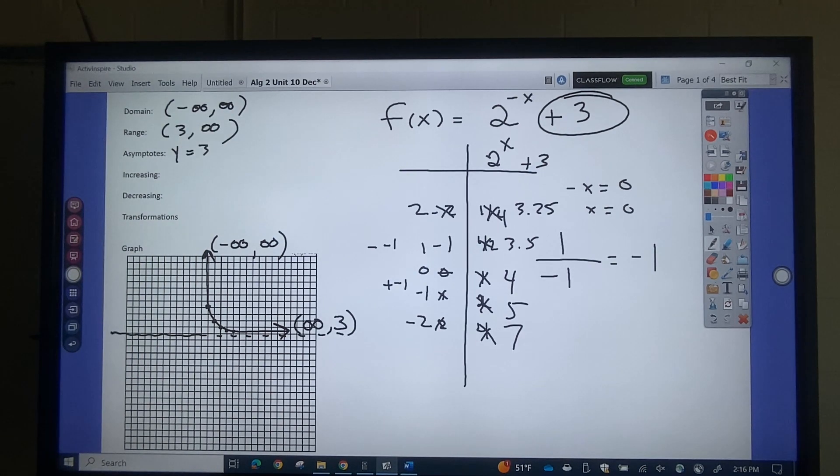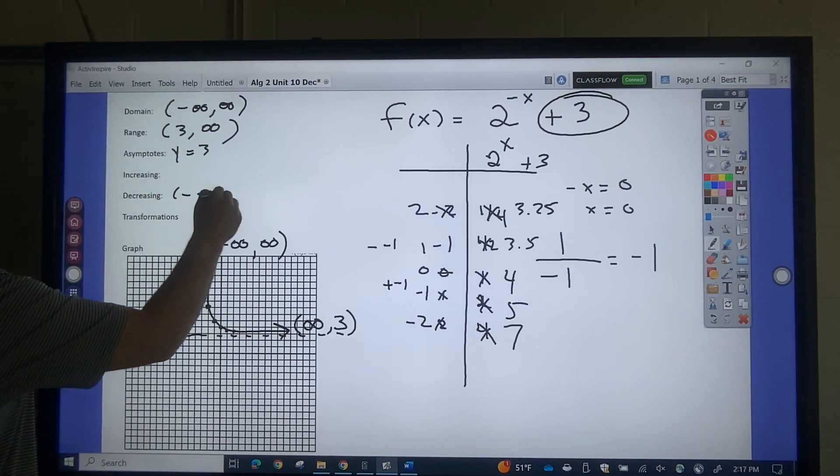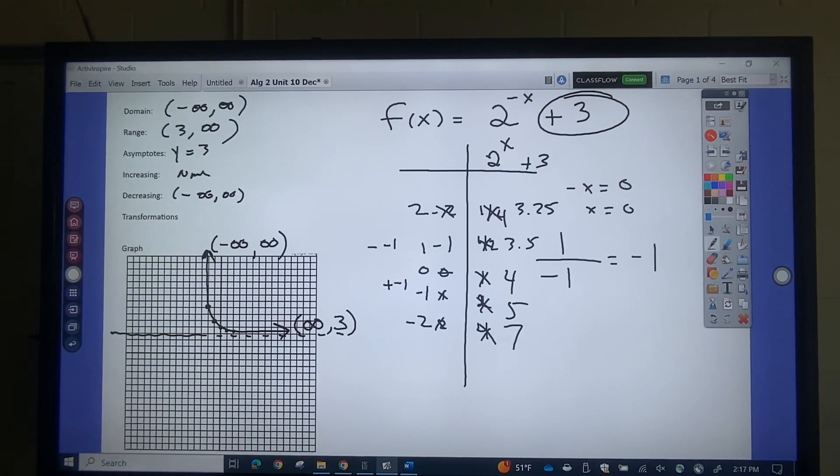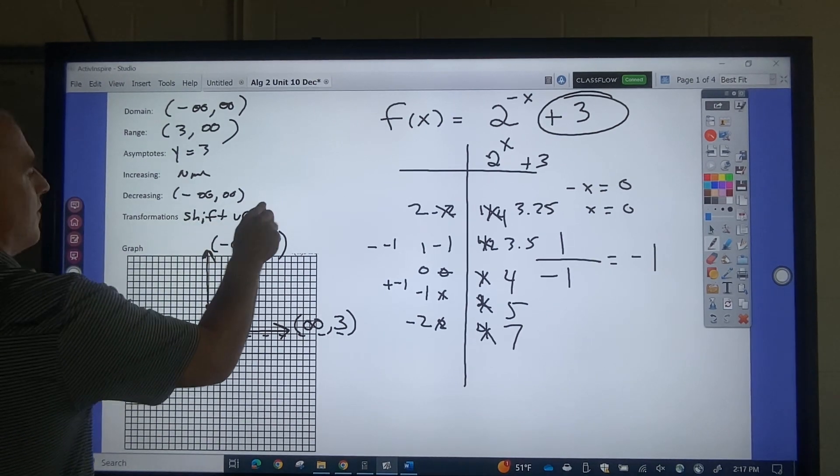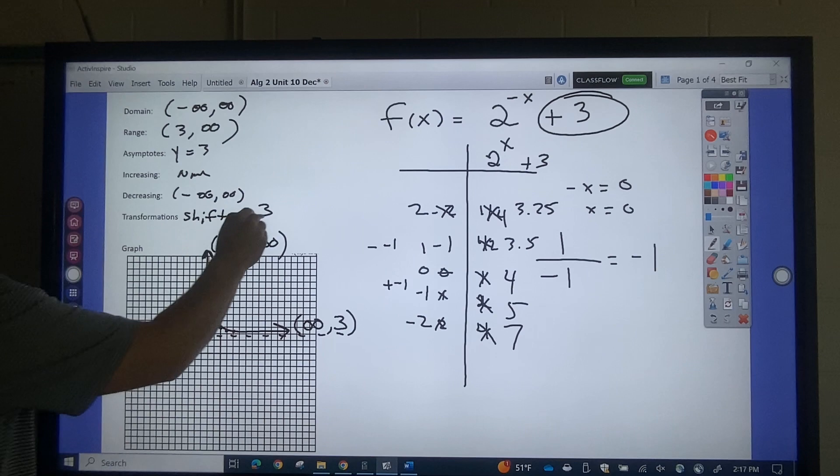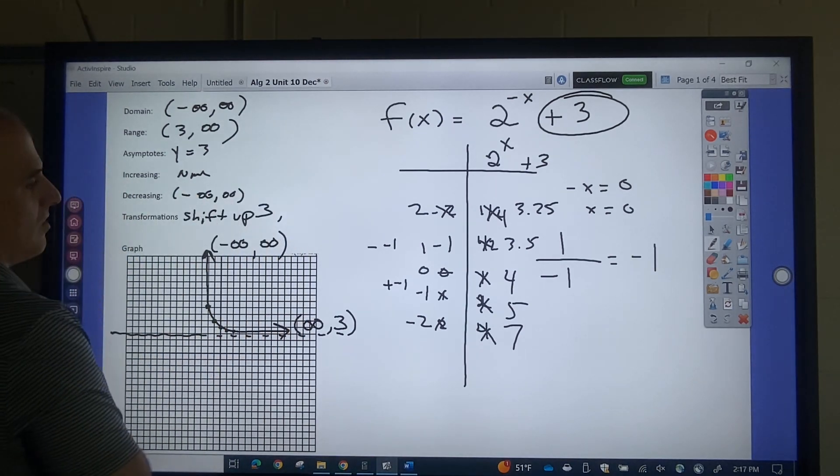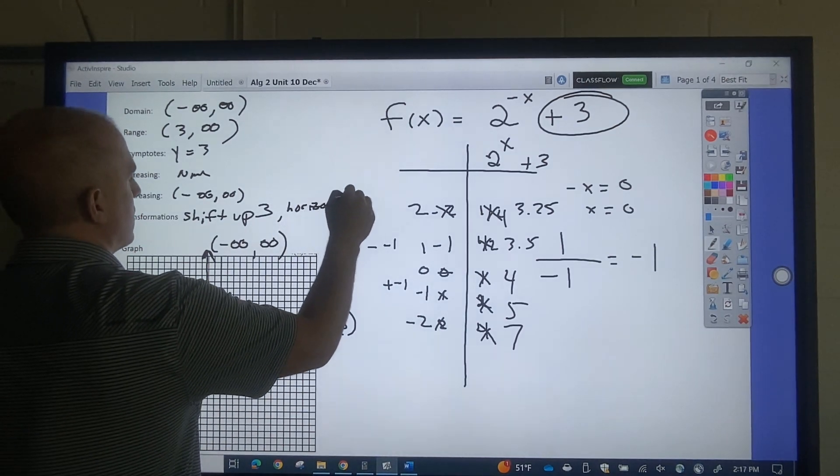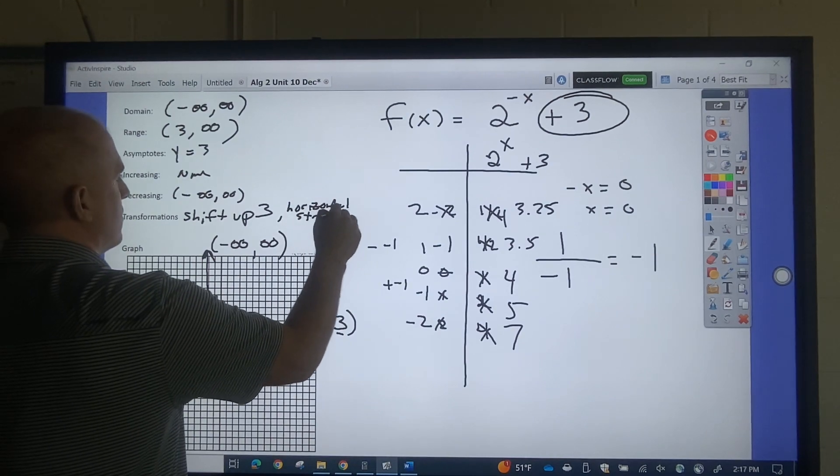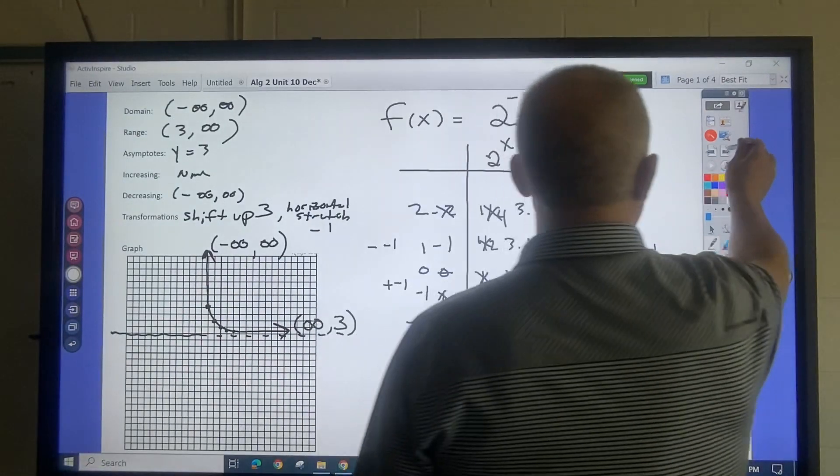Curve bracket because it comes from the asymptote. If I start from the left, this is decreasing the whole way. From negative infinity to infinity, this is none. So what are my transformations? I have a shift up of 3, and I have a horizontal stretch of negative 1. And that's what that accounts for there. Let's do another one.